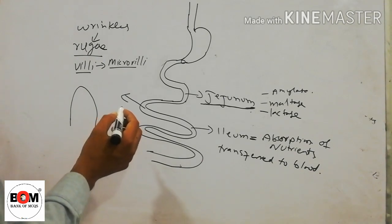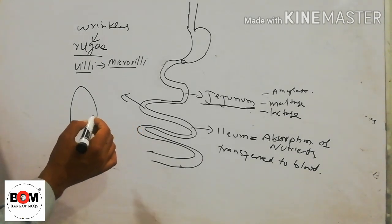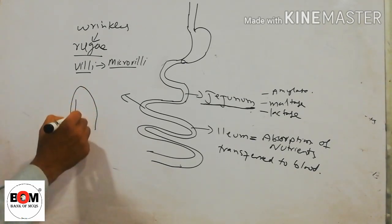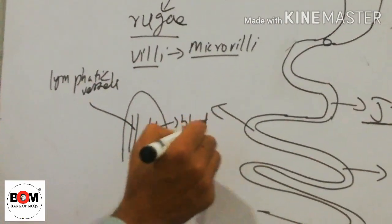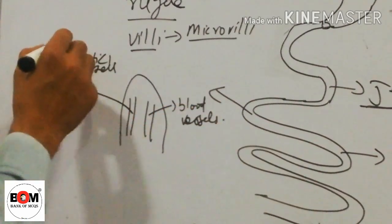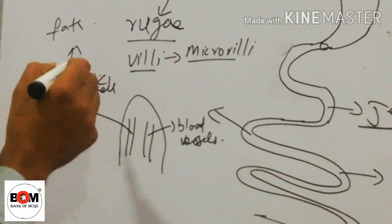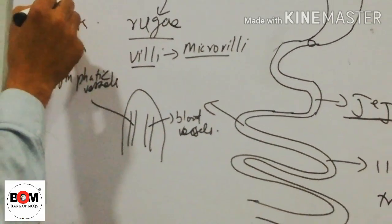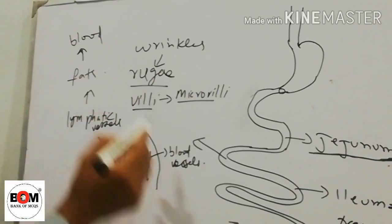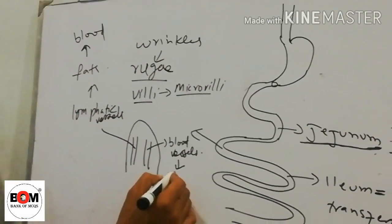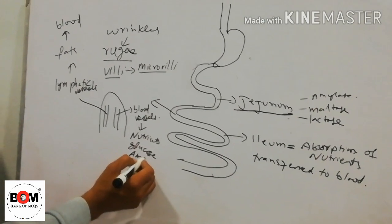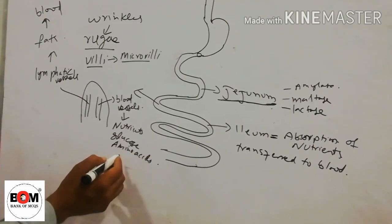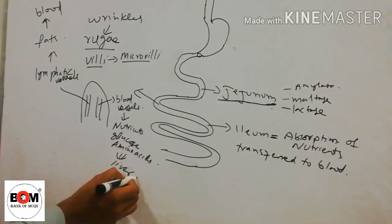The absorption occurs in the microvilli. In the microvilli, there are two types of vessels. One is lymphatic vessels, and the second is blood vessels. The lymphatic vessels absorb fats, which are then transferred to the blood. The blood vessels absorb the remaining nutrients like glucose and amino acids, and transfer them to the liver for storage.